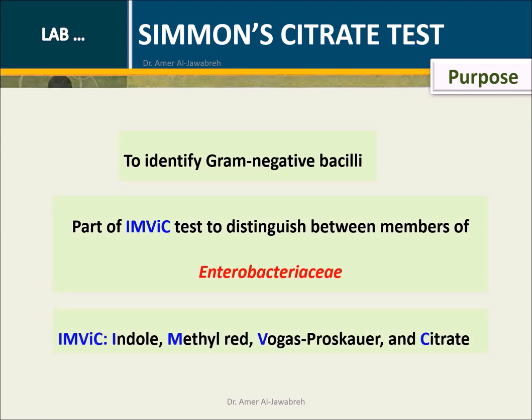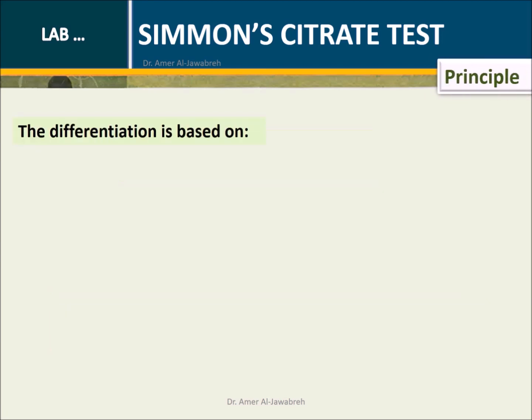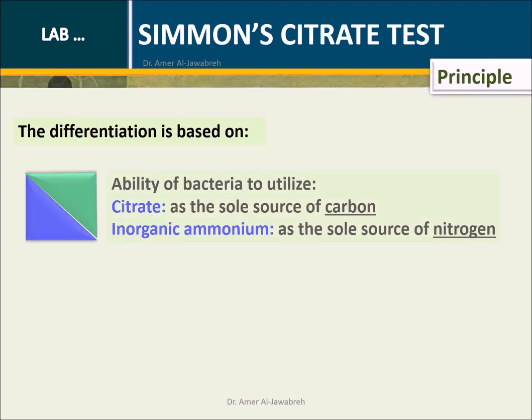The IMVIC test stands for Indole, Methyl Red, Voges-Proskauer, and Citrate. Principle: The differentiation is based on the ability of bacteria to utilize citrate as the sole source of carbon, and organic ammonium as the sole source of nitrogen.